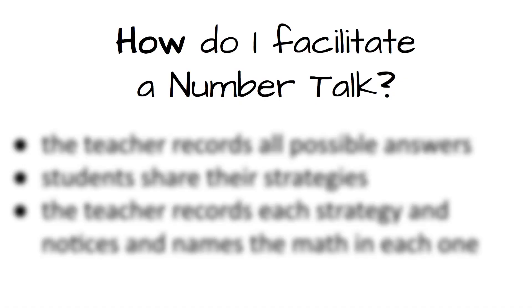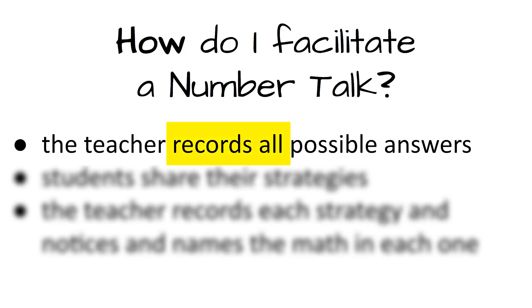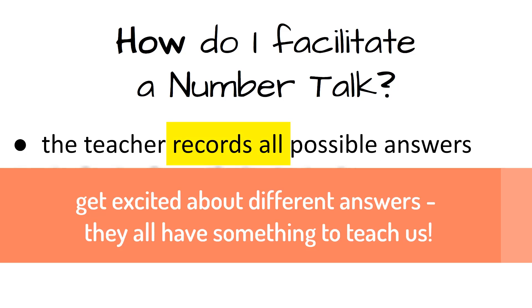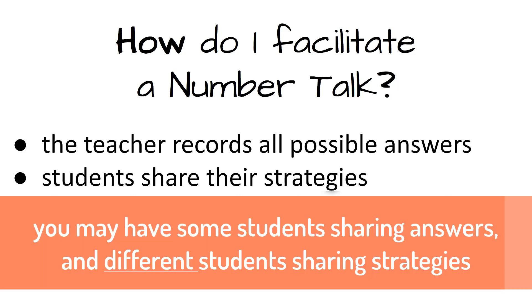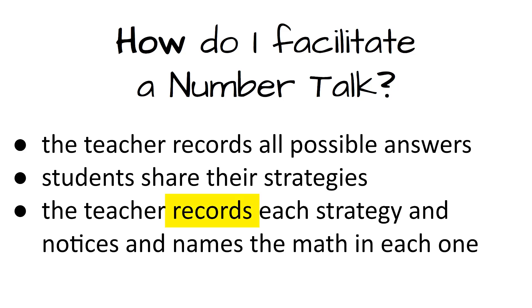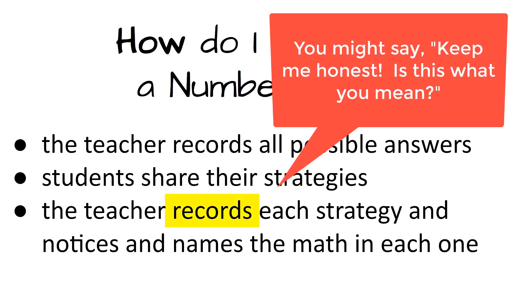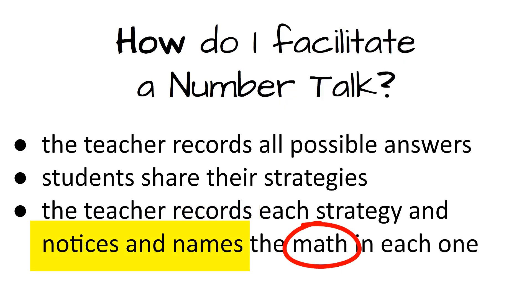Once students have all had enough quiet think time, the teacher is going to record all possible answers. You might get one answer, you might get several answers, and you're going to write them all down. A lot of people do that in the corner of the board, and then students one by one are going to share their strategies for how they solved the problem. The teacher is going to record those strategies — you might ask the student if you are recording it correctly — and the teacher then notices and names the math in each one.